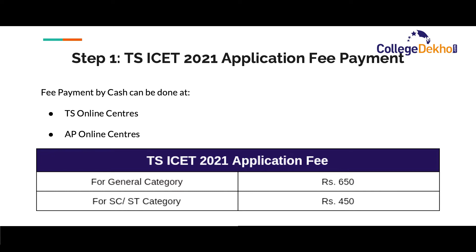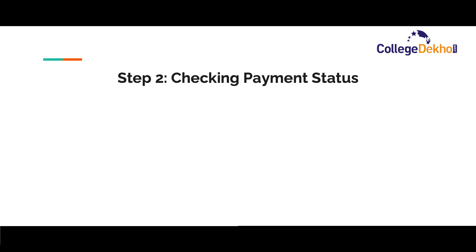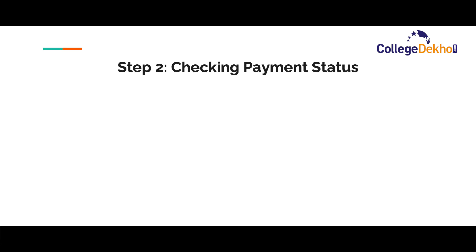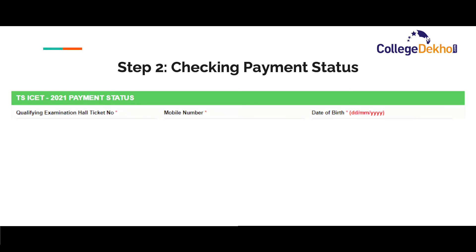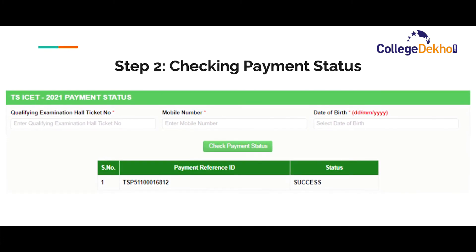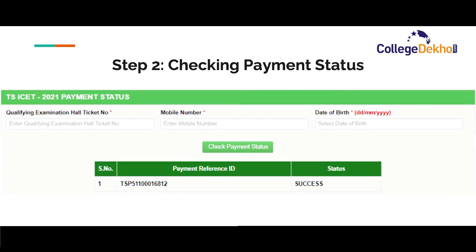The TSISet application fee is Rs. 650 for general category and Rs. 450 for SC/ST category candidates. If you have completed the payment online, you will receive a confirmation message immediately after your payment is confirmed and can click on proceed to fill the application form. If you paid by cash, visit the homepage again, click on the payment status link, enter your qualifying exam hall ticket number, mobile number and date of birth, and click on check payment status. Note the payment reference ID given on this page as it will be required later. The application form does not need to be filled immediately — you can do it at any point before the deadline. However, it is recommended to complete submission early to avoid any glitches due to last minute rush.